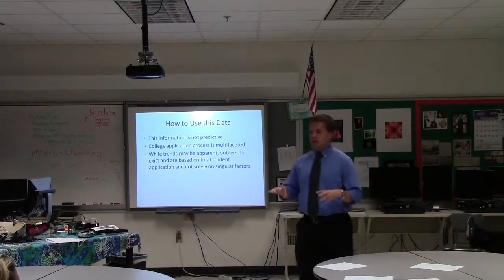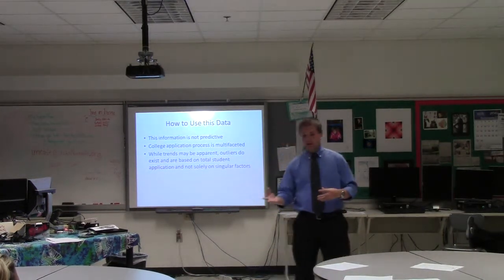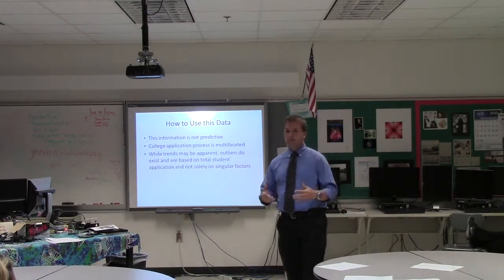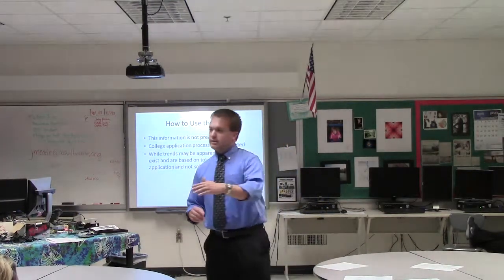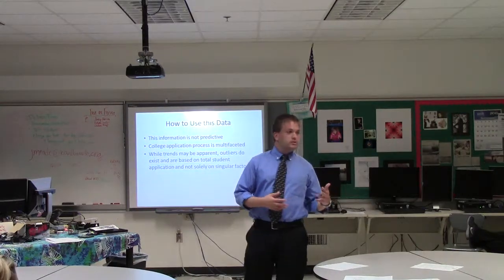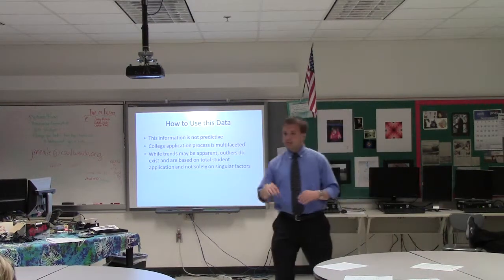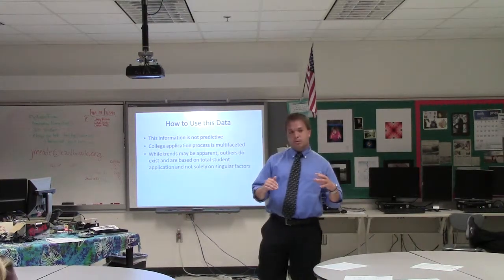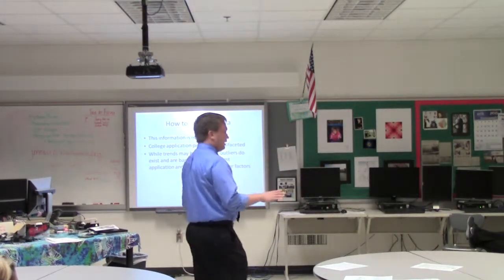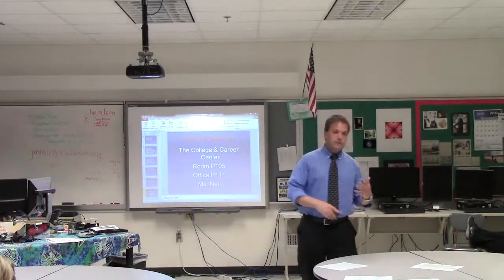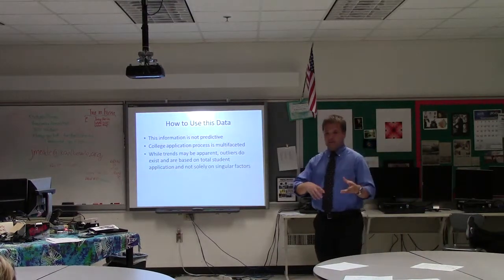Some schools do a tremendous job of sorting through it with a very holistic approach — University of Virginia, University of Richmond, William & Mary. Some schools are just numbers: do you have the GPA, the decile rank, the SAT scores? Those tend to be your bigger institutions — Virginia Tech, George Mason, VCU. Some schools fall in the middle — a little about the numbers and a little about the person — like Mary Washington, James Madison, Longwood. There's no fault in how any college does it; they do it based on their philosophy and available admissions personnel.